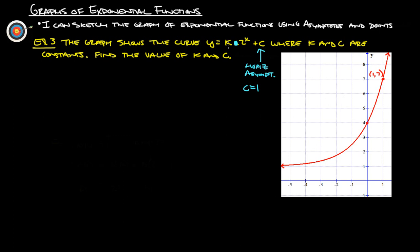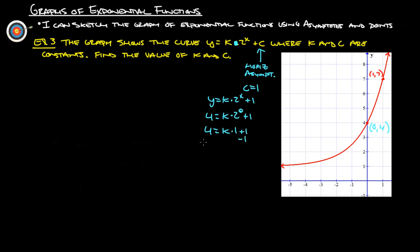Now we find k. We have y equals k times two to the x plus one. We also know that when we plug in zero for x, we get four for y — so the point (0, 4) is on the graph. So four equals k times two to the zero plus one. Two to the zero is one, so that's k times one plus one. Subtract one from both sides: three equals k.